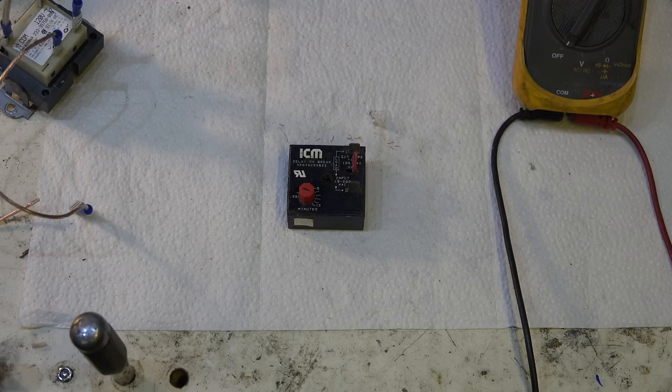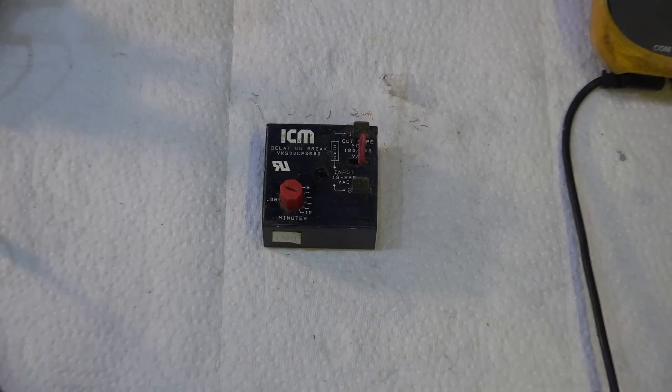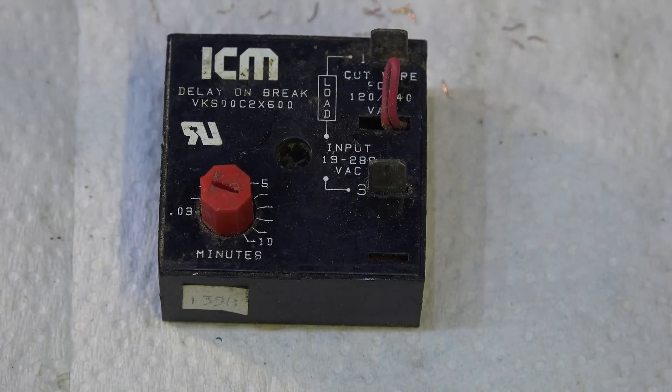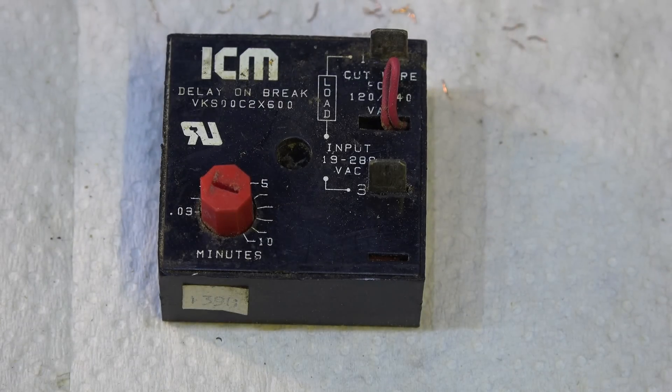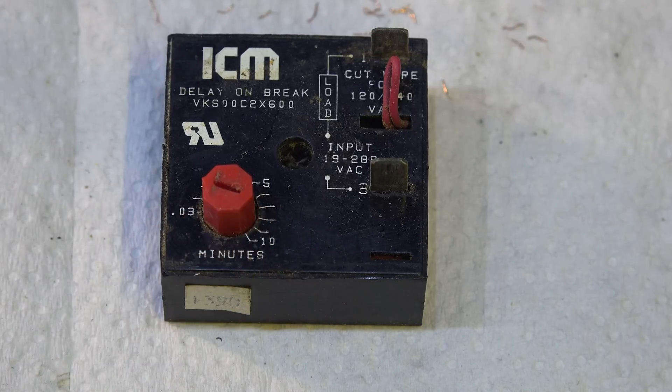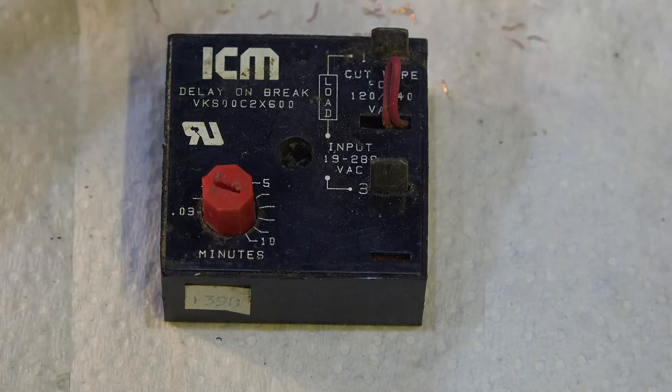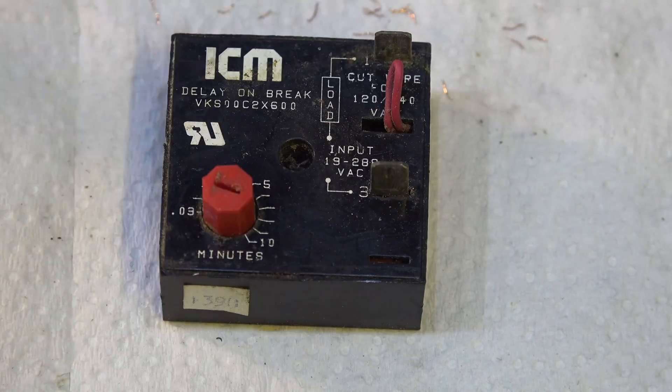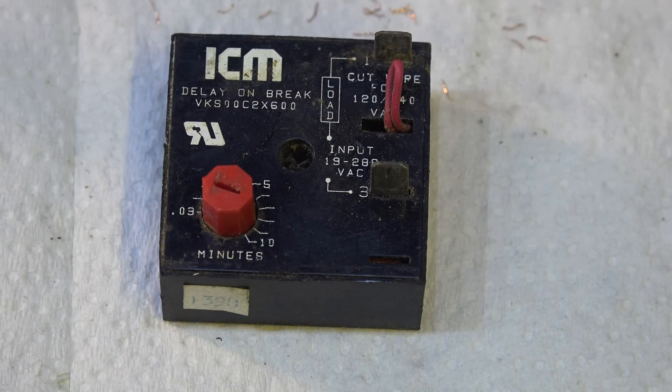So what's this silly thing? It says it's a delay on break and it's got a little dial here that you can adjust for minutes. It's got two terminals, one here and one here. This thing can have inputs anywhere from 24 volts to 240.